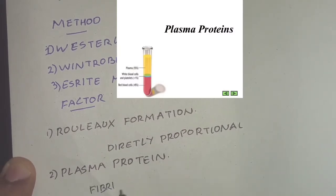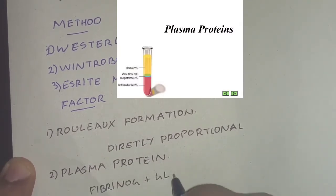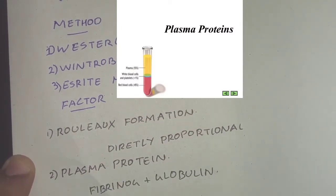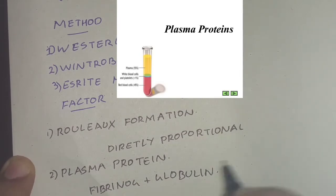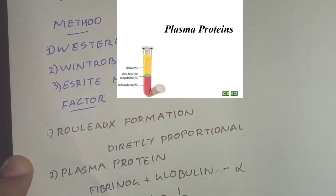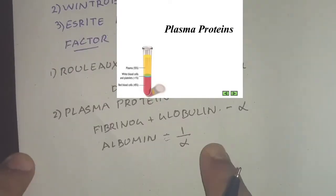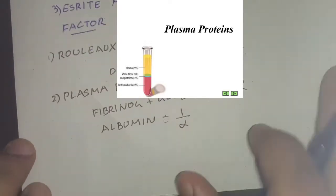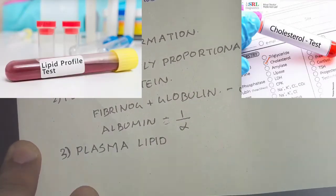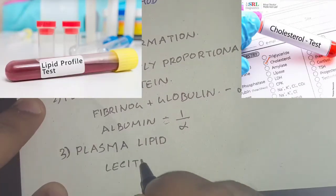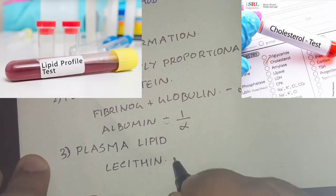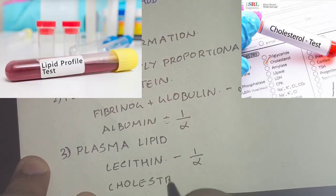For plasma proteins: fibrinogen and globulin neutralize the surface charge of the RBC, which aids rouleux formation and thus increases ESR. Albumin, on the other hand, decreases the ESR.